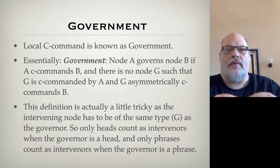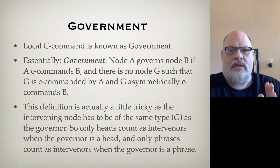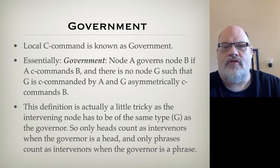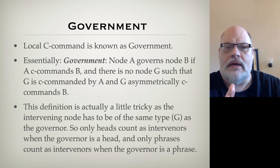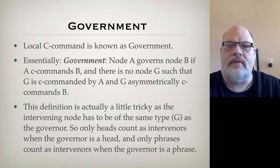Remember, those local dominance and precedence relationships relied upon the notion that if there was nothing intervening between them, they were local. With immediate precedence, A does not immediately precede G because B intervenes between A and G. This is the same thing here.